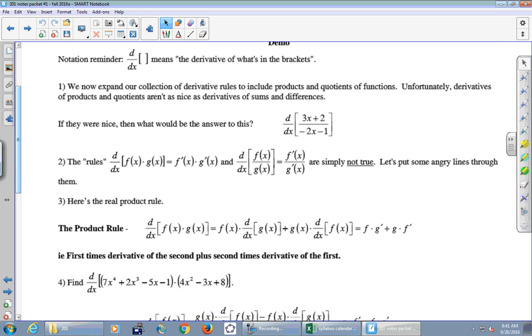Number one, we now expand our collection of derivative rules to include products and quotients of functions. Unfortunately, derivatives of products and quotients aren't as nice as derivatives of sums and differences. If they were nice, then what would be the answer to this? So this problem here says find the derivative of (3x + 2) over (-2x - 1). So if we could just do derivative of top and bottom separately, what's the derivative on top? 3. And on the bottom? Negative 2.